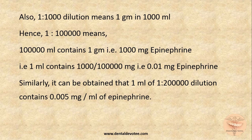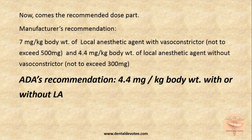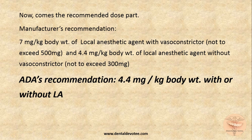By now you might have understood that 1:1000 is a very strong concentration of epinephrine, 1:100,000 is less strong, and 1:200,000 is much less strong. According to the manufacturer's recommendation, 7 mg per kg body weight of local anesthetic is recommended when added vasoconstrictors are present, but that should not exceed 500 mg in a single appointment. Without vasoconstrictors, it is 4.4 mg per kg body weight. According to the American Dental Association, whether vasoconstrictor is added or not, the recommended dose is 4.4 mg per kg body weight.